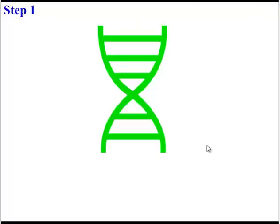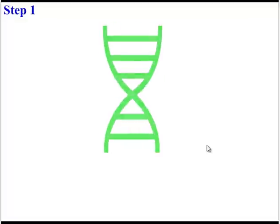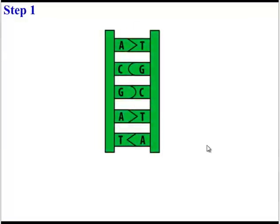The first step to DNA replication is this. Enzymes unwind the DNA helix. So instead of a spiral staircase, now we have more of a ladder.